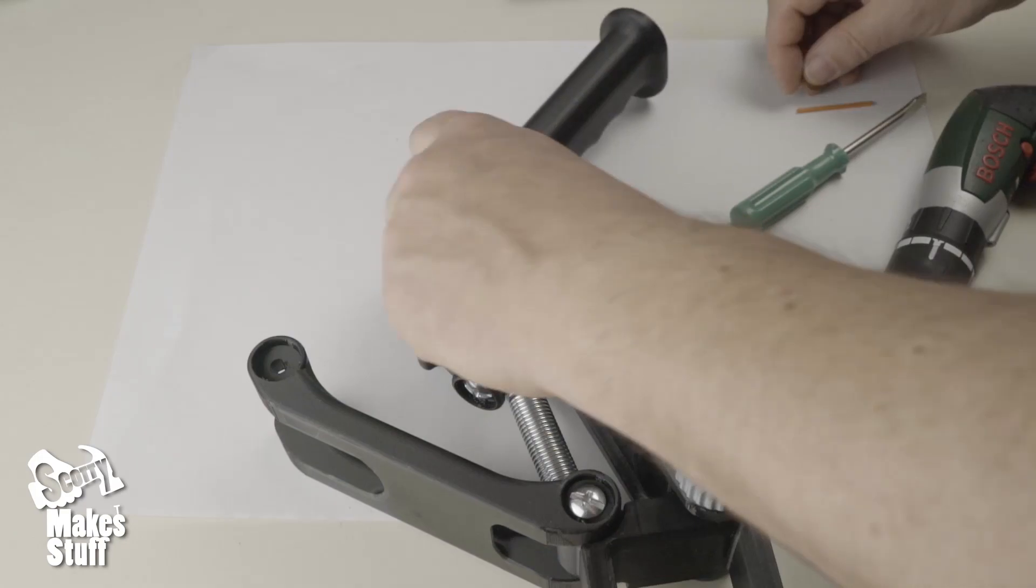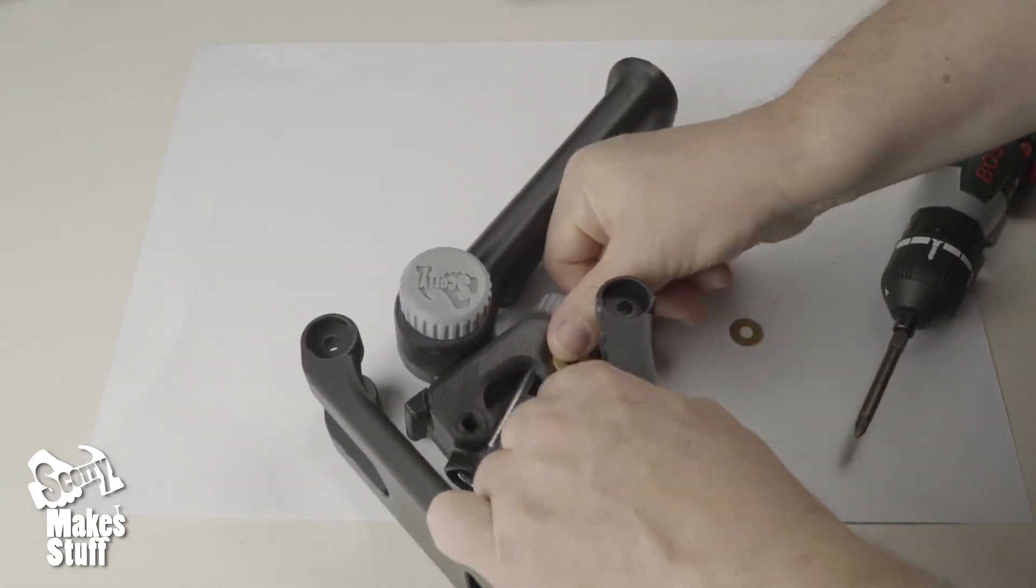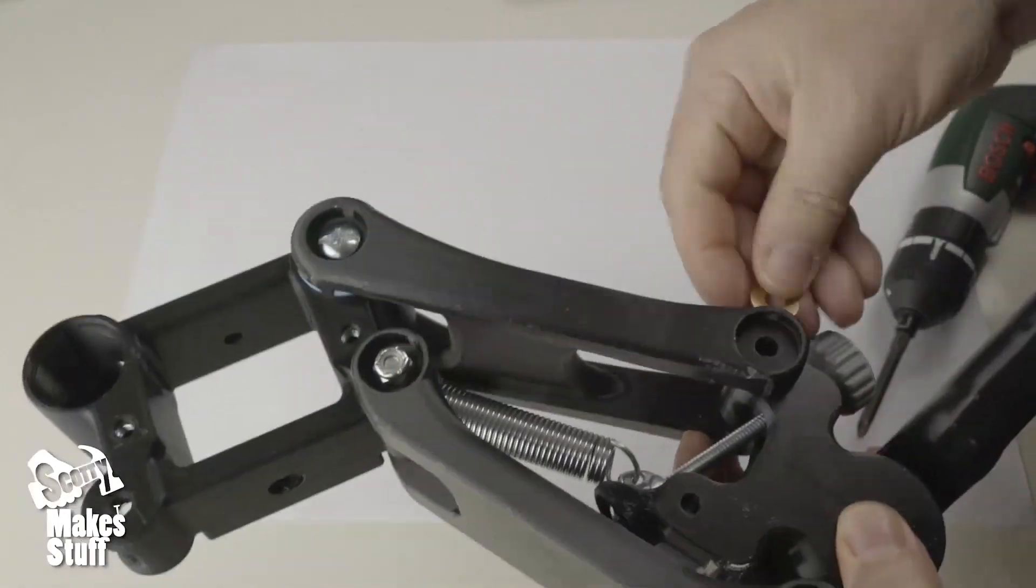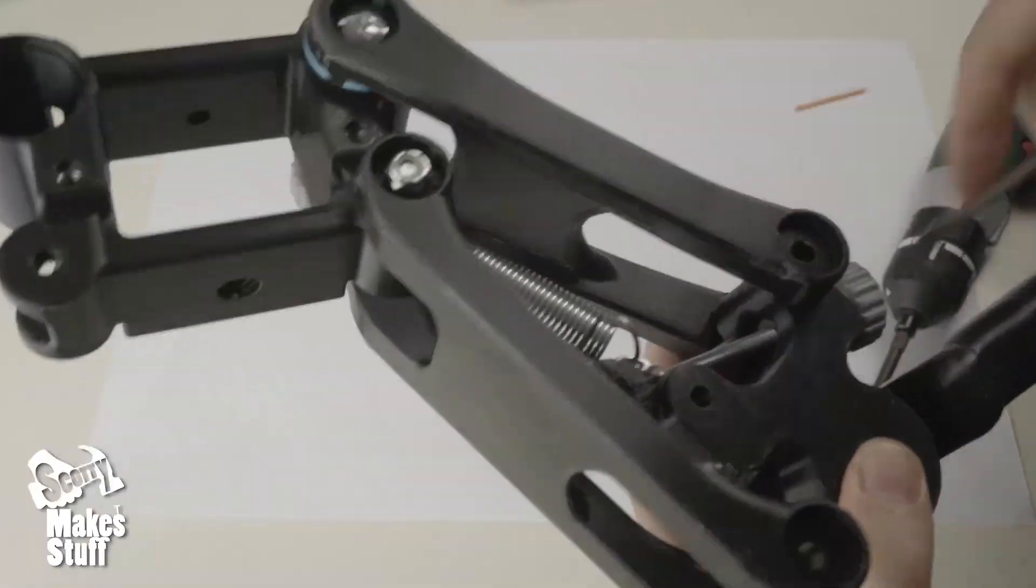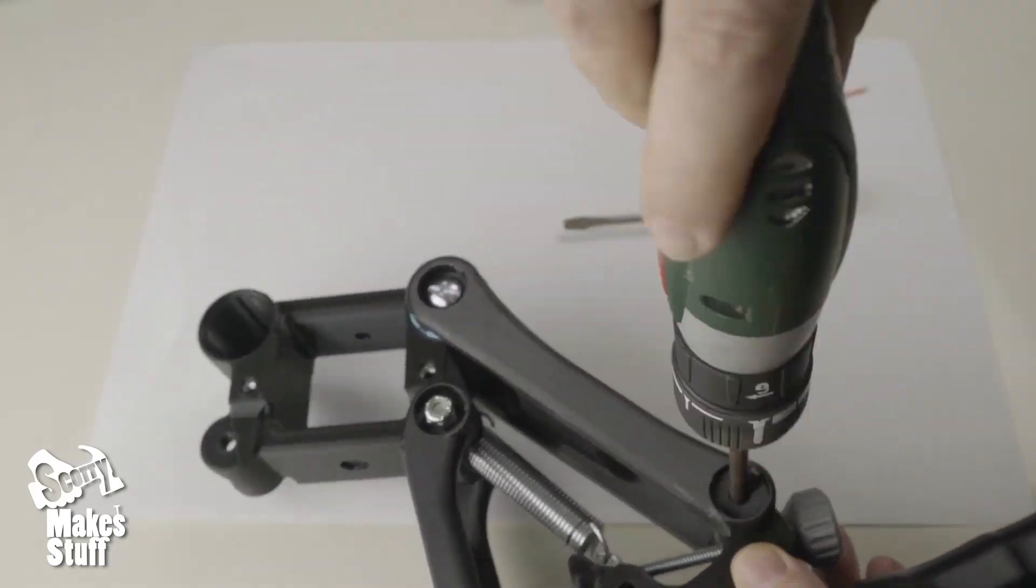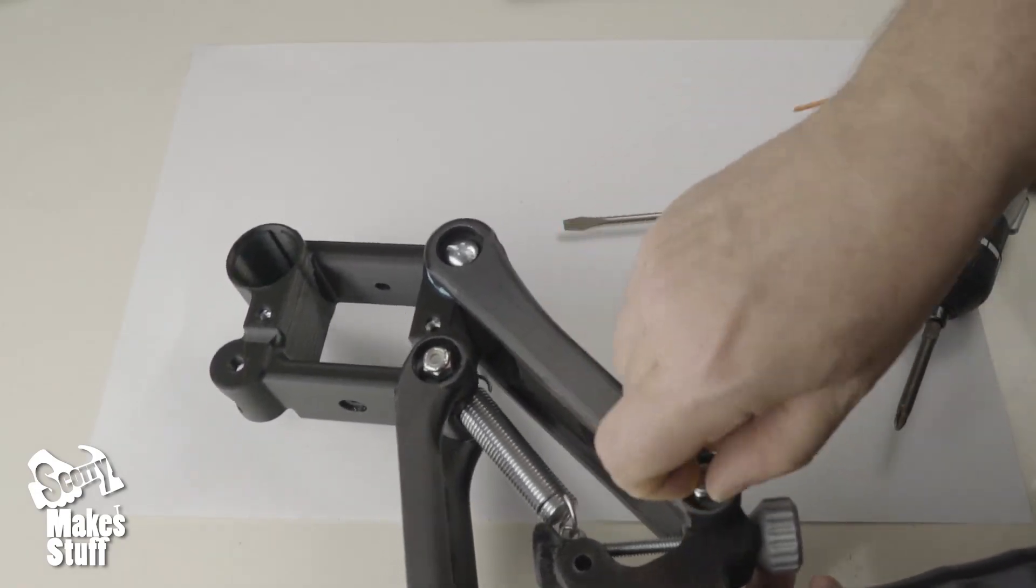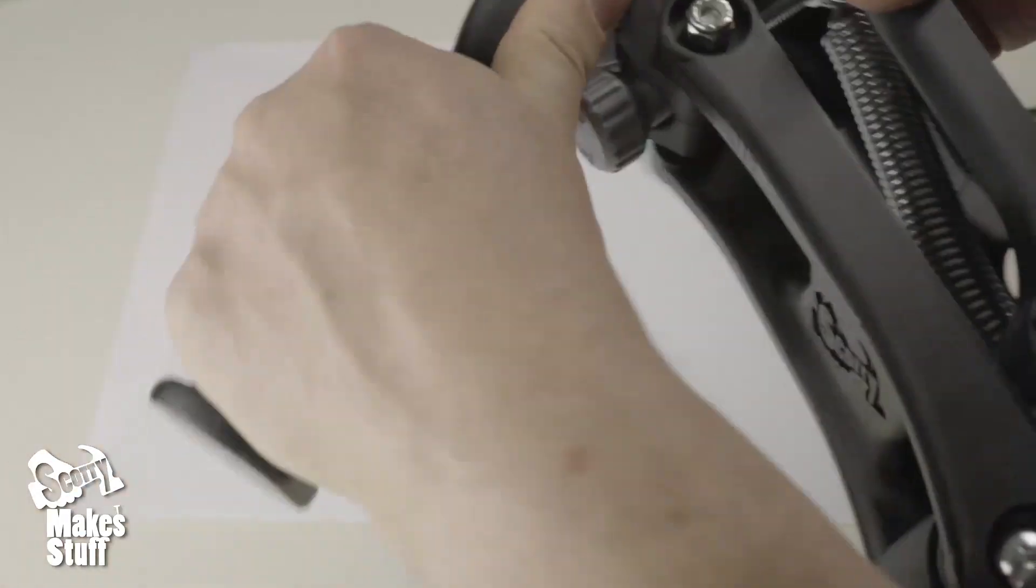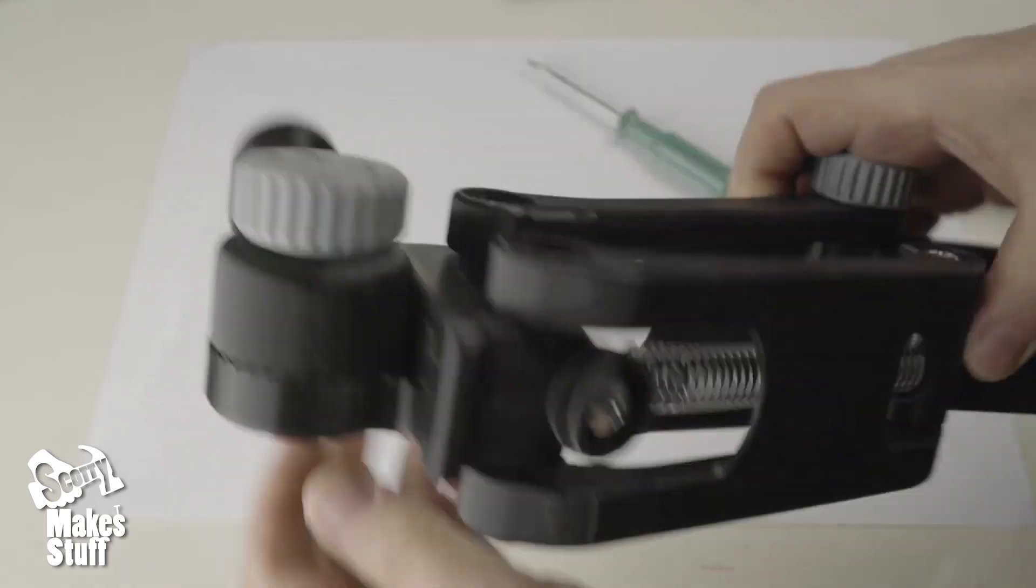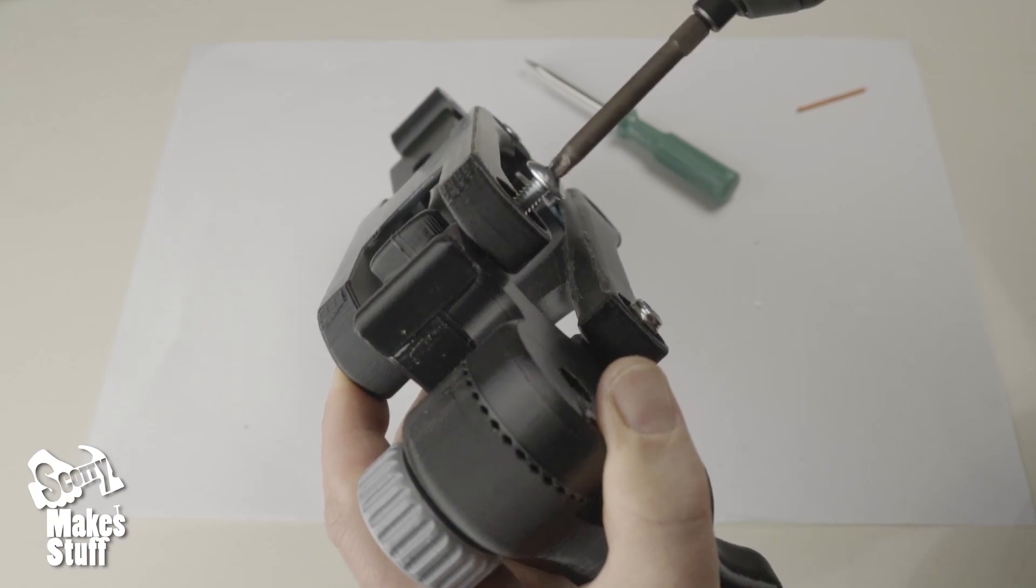Now attach the handle assembly to the top arm with two brass washers. Now we'll add the last bolt. This last one is under tension, so the easiest way to do this is with some help, although you can easily do it yourself.